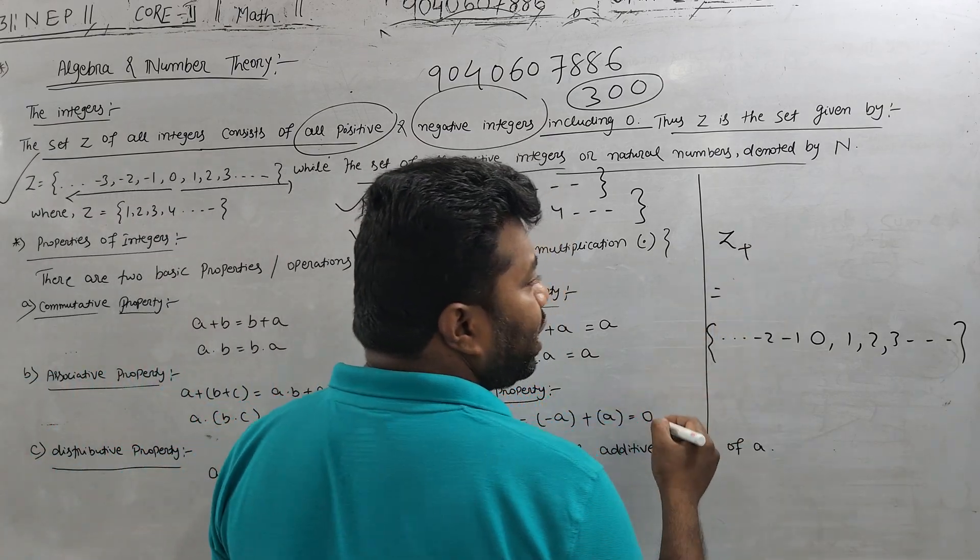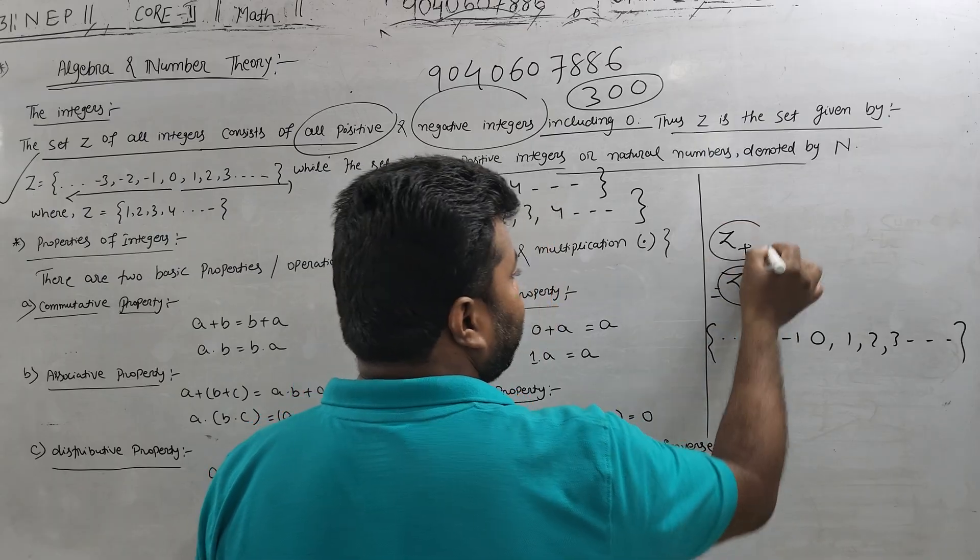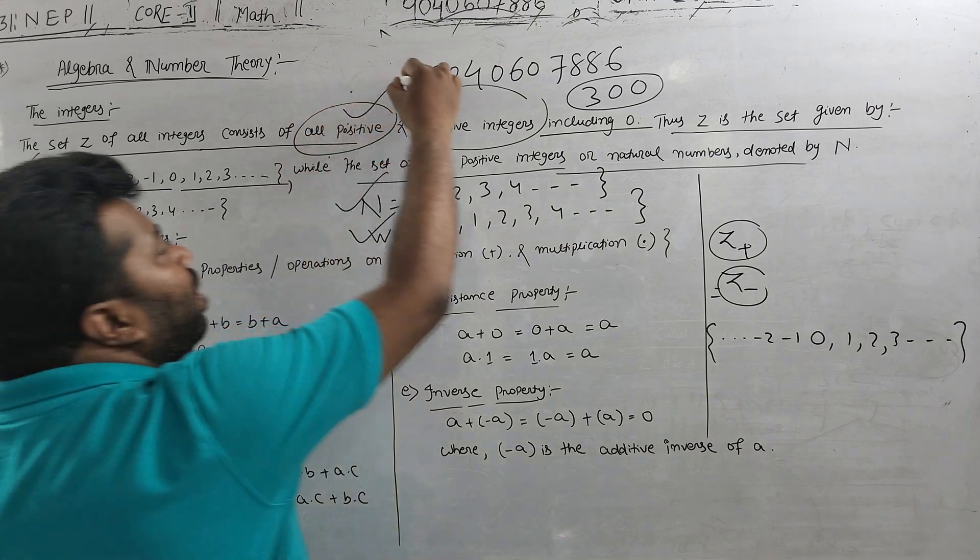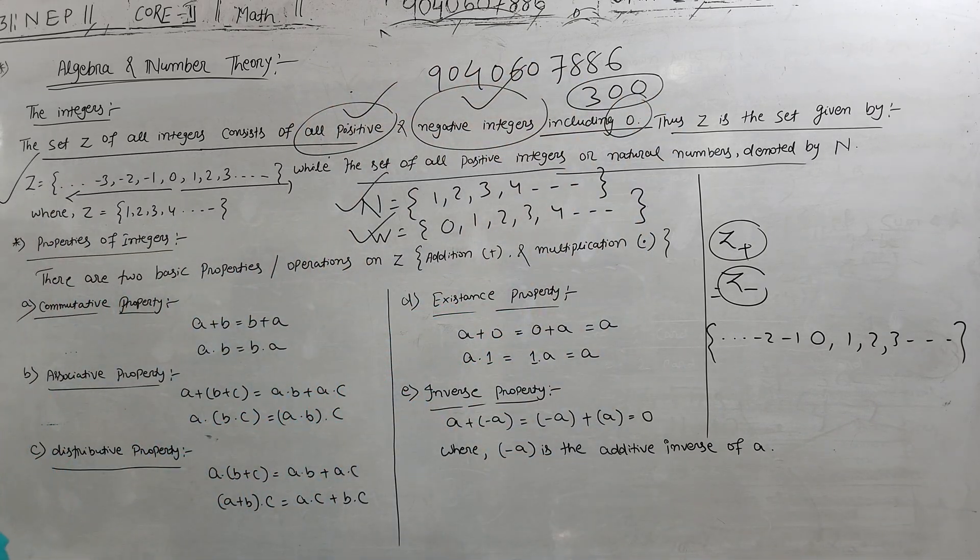The set Z is given by 0, positive number. The set of all positive numbers or the natural numbers is denoted by N. The set of natural numbers is 1, 2, 3, 4. All positive numbers with 0 included: 0, 1, 2, 3, 4. This is the natural number and this is the whole number which is the natural number of the integer.